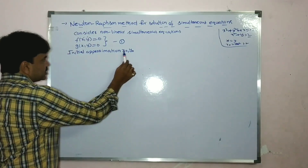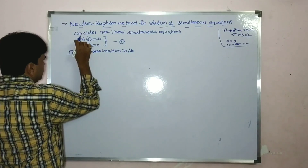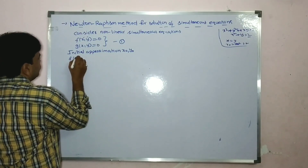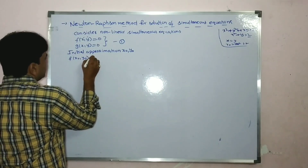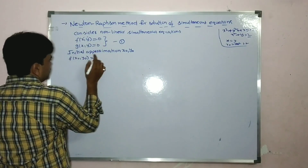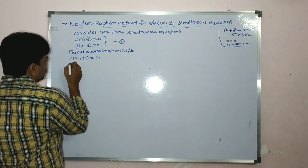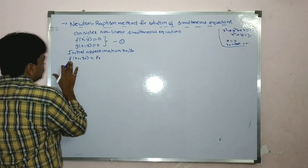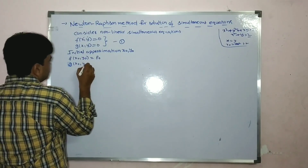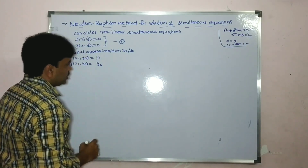After getting the initial approximation x0 and y0, you substitute these two points in equation one. So we get f of x0 and y0 — say it is f0. Then you substitute in the second equation and get g of x0 and y0 — say it is g0.